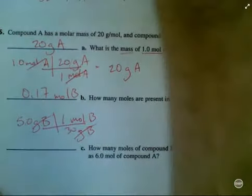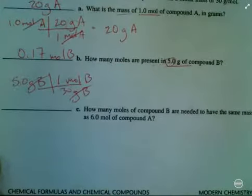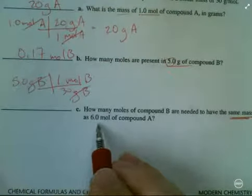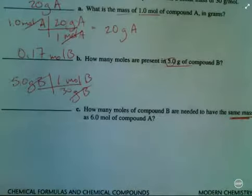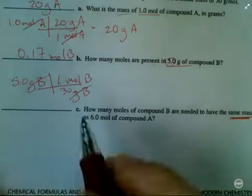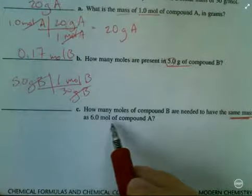Let's finish up with number 6. How many moles of compound B are needed to have the same mass as 6 moles of compound A? Now, we're not going to necessarily get to do one conversion and be done. We're actually going to have to do a couple of conversions. So follow along with the thought process here.